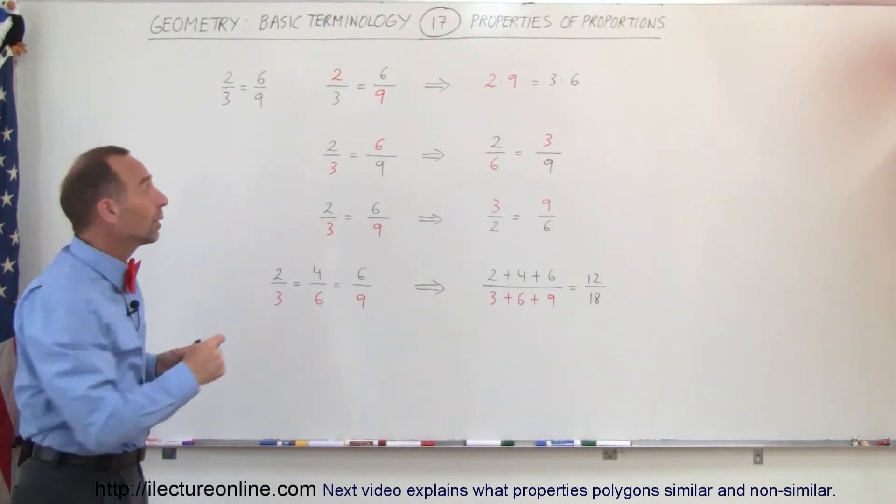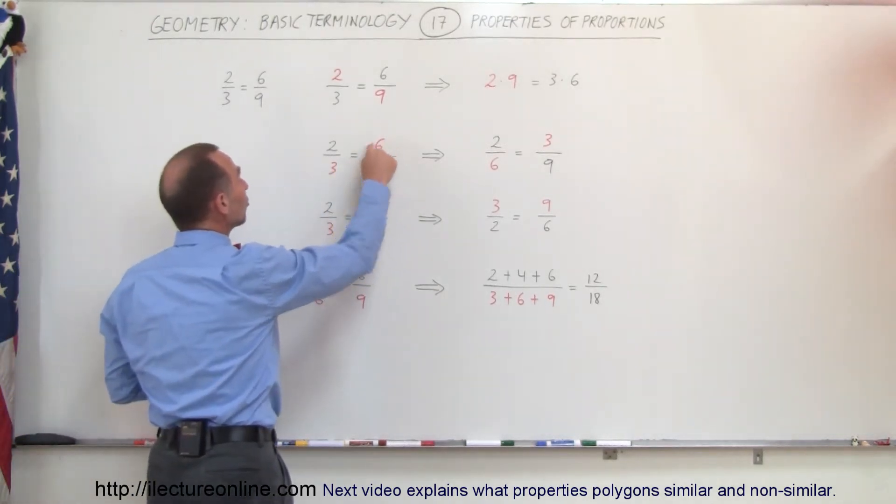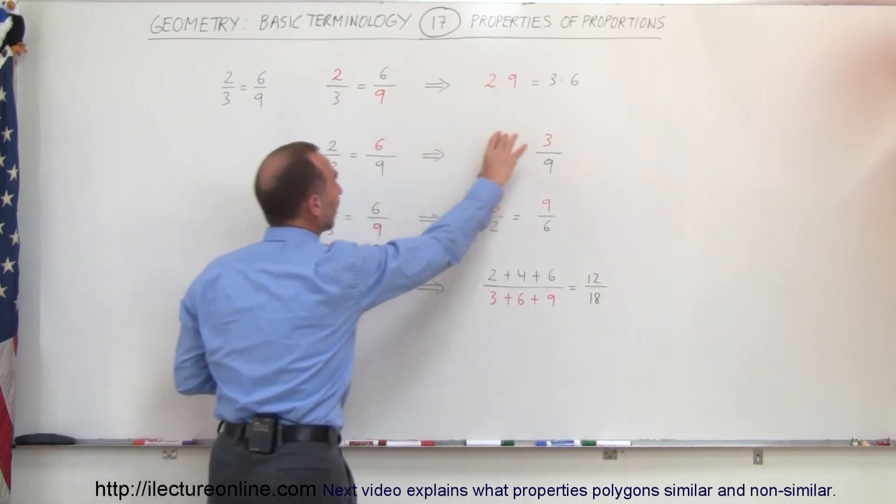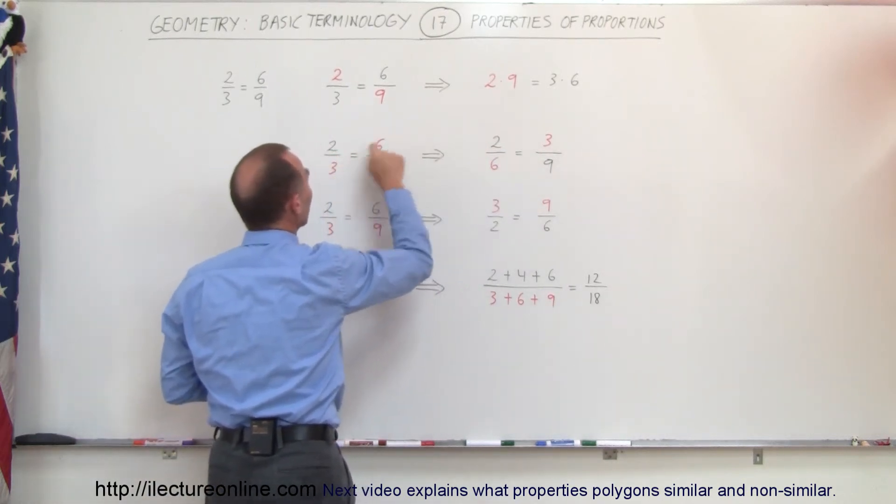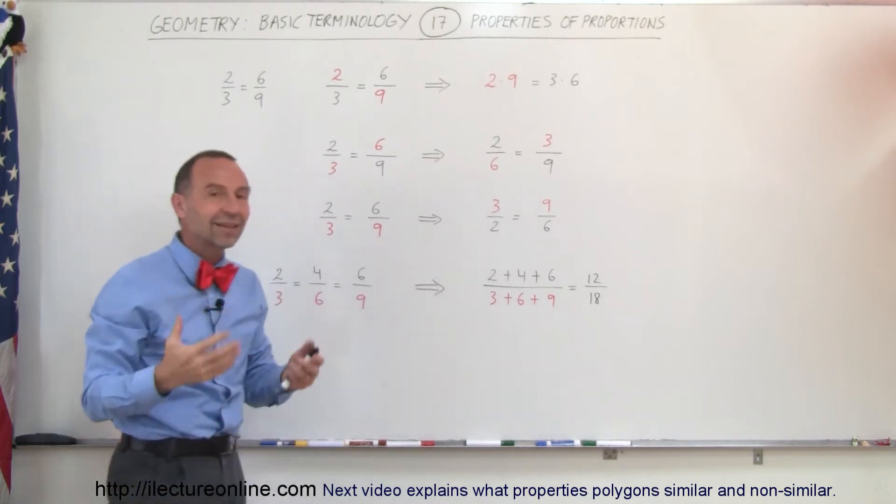Another thing that we can do is we can interchange the 6 and the 3, so we can write this like this by putting the 6 down here and the 3 up there, and we get the exact same proportion.